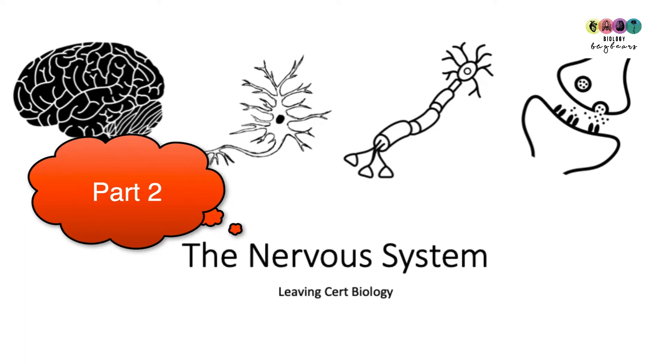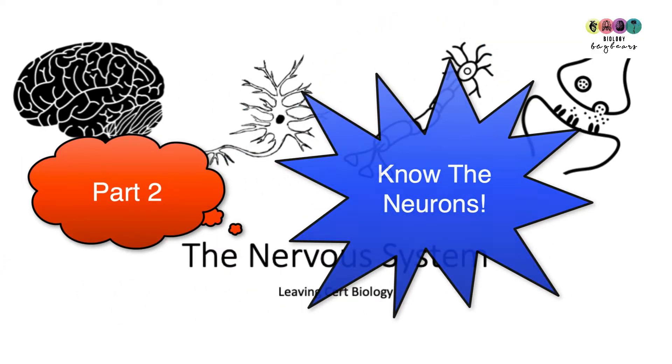So this video is on the nervous system and it's part two. Part one covered the structure of those neurons, those nerve cells, and it's really important that you get that. If you don't know the structure of the neurons, go back and learn it before you go on to this material.